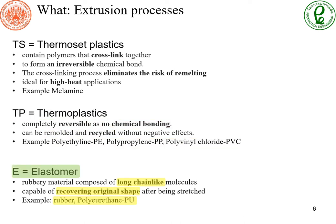Elastomers are mainly rubber, including synthetic rubber, polyurethane, or PU. This type of material can recover to its original shape after being stretched.